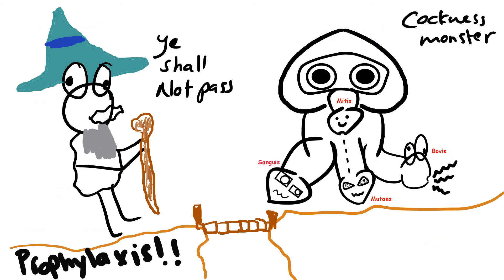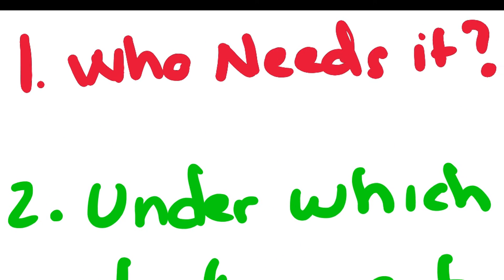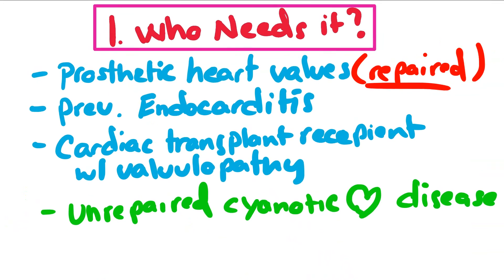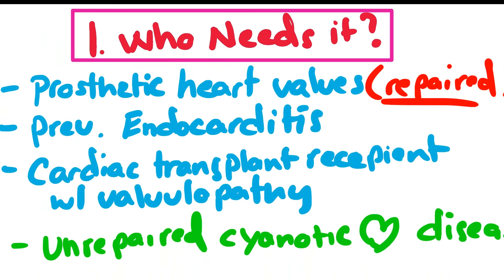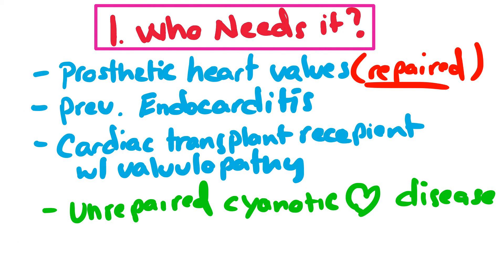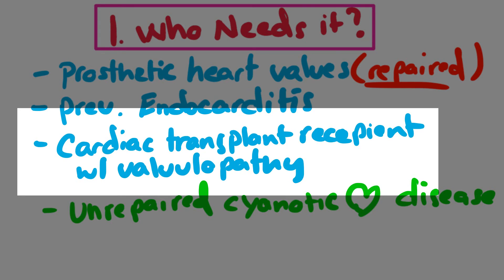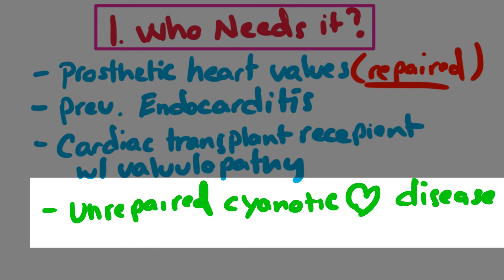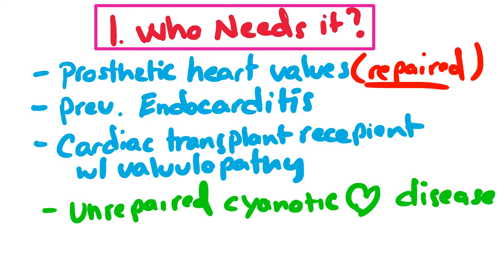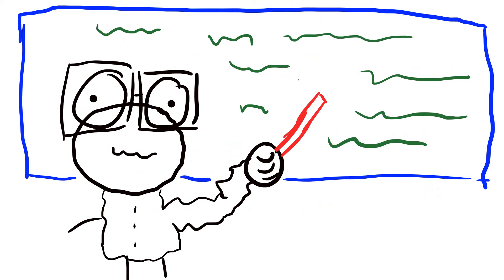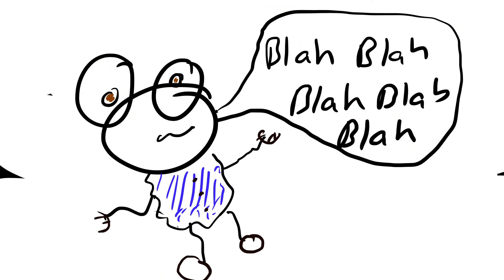For endocarditis prophylaxis, ask two questions: which patients need it, and under which procedures is it given? Patients who need prophylaxis are those with serious heart defects: prosthetic valves, previous endocarditis, cardiac transplant recipients with valvulopathy, or unrepaired cyanotic heart disease. Patients with mitral stenosis or regurgitation from any heart valve do NOT need prophylaxis unless their valves have been replaced or they have had previous endocarditis.